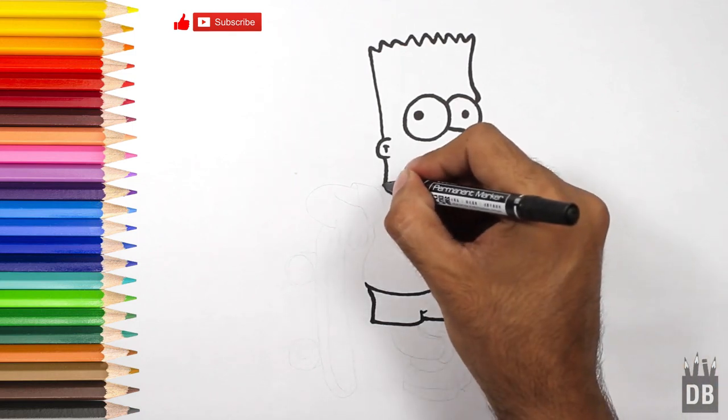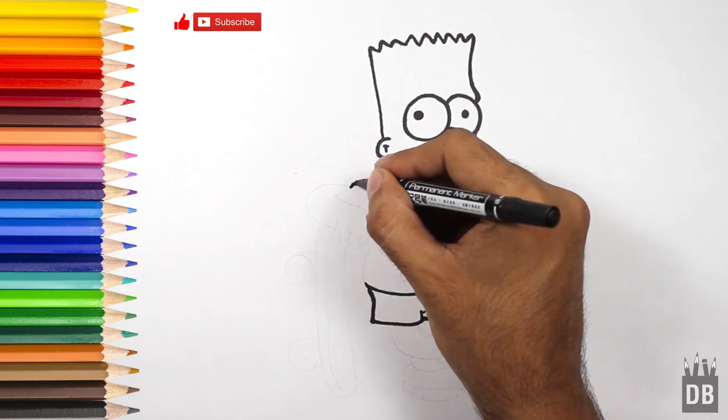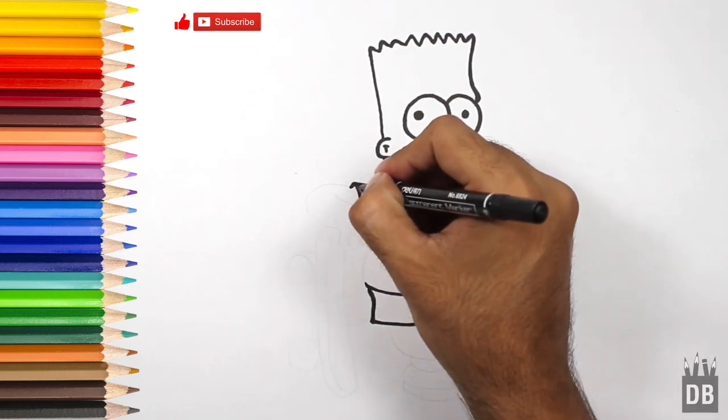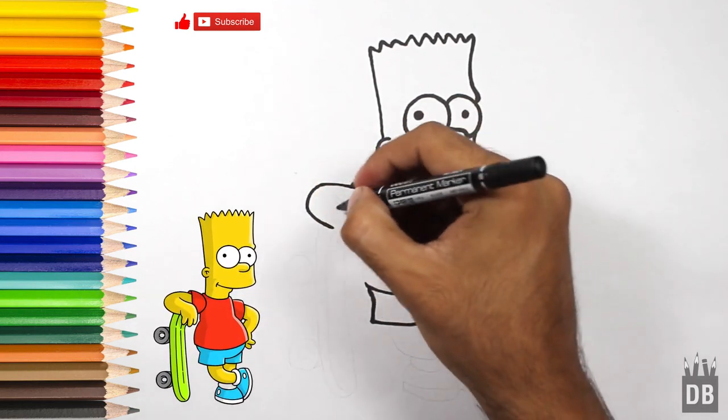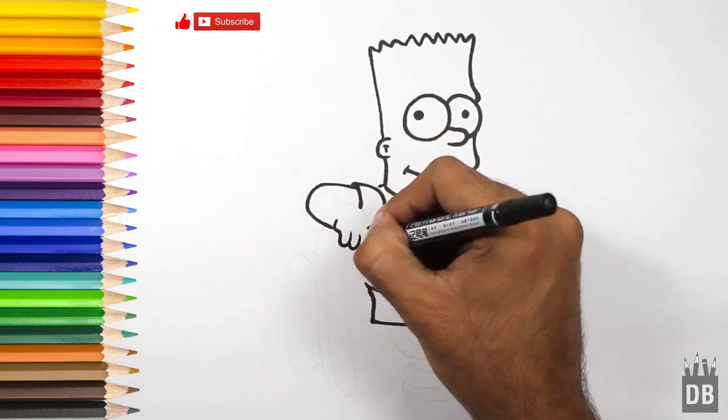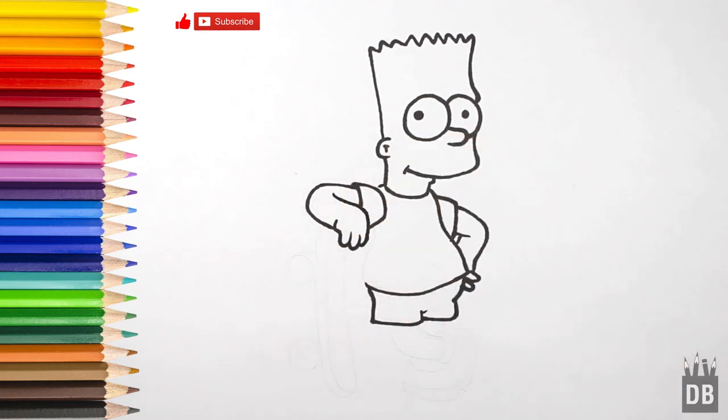Now we are going to make the shoulder and the second arm. The second arm will come over from here, curve line. So curve line, from here his arm will come out and fingers will start. As you can see.